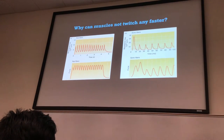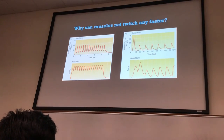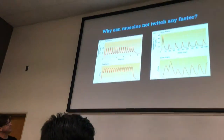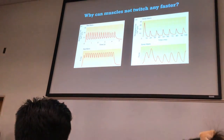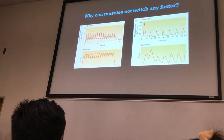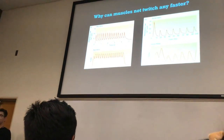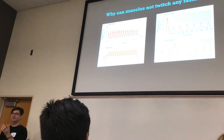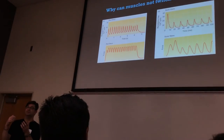At some point, muscles can no longer contract any faster — there's an upper limit to muscle contraction. Yet we have some muscles out there that contract very, very rapidly. They're known as sonic muscles or sonic fibers. One example involves the bladder wort — it's one of the fastest muscles out there.